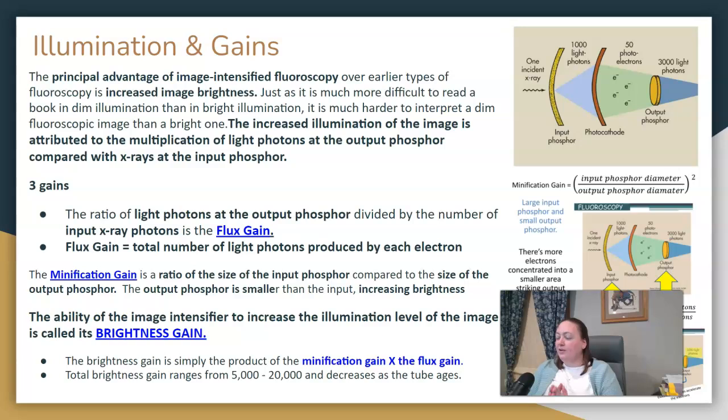And then there are three gains that are involved with fluoroscopy. The first one is called flux gain. And this is a ratio of, they take the number of light photons at the output phosphor, and they're going to divide it by the number of input x-ray photons that we had at the input phosphor and do a comparison of the two.